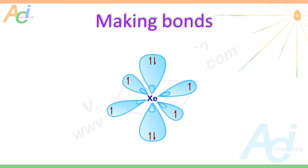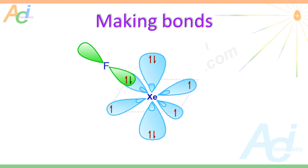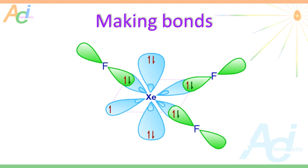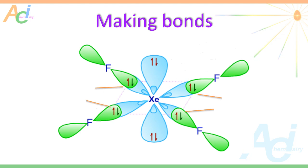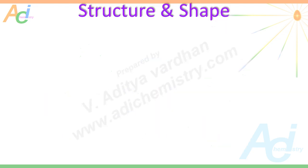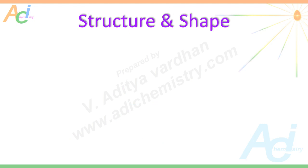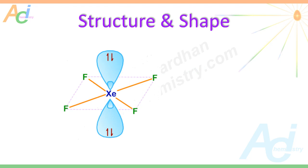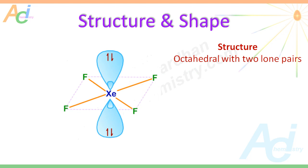The half-filled hybrid orbitals will make sigma bonds with fluorine atoms. There are two kinds of electron pairs around the xenon atom: four bond pairs projecting towards the corners of a square plane, and two lone pairs in the axial positions. The structure of XeF4 is referred to as octahedral with two lone pairs, while the shape is referred to as square planar. The structure includes lone pairs while the shape includes only the arrangement of bond pairs. The bond angle is 90 degrees.